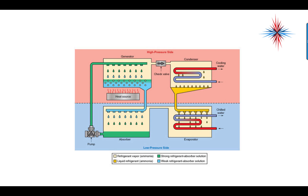The generator has a heat source, then it goes to the condenser where it condenses, then to an evaporator, and then back to the absorber, and then back to the generator. It is a cycle. The refrigerant — ammonia — has both a vapor and a liquid state, and the absorber solution has a strong and a weak state.